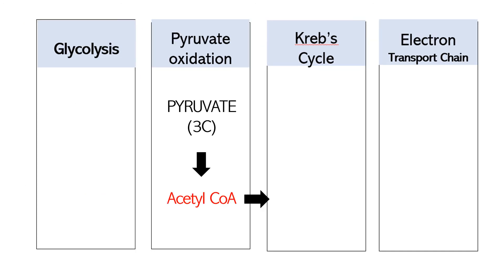The pyruvate produced is then oxidized to become acetyl-CoA. The production of acetyl-CoA will activate the Krebs cycle, or the citric acid cycle. This occurs in the mitochondria. The goal of pyruvate oxidation is to produce acetyl-CoA.